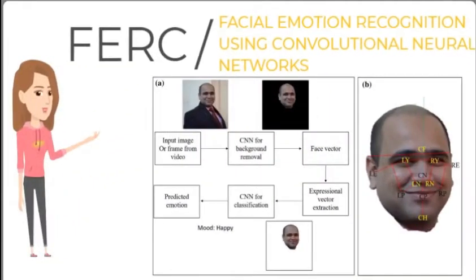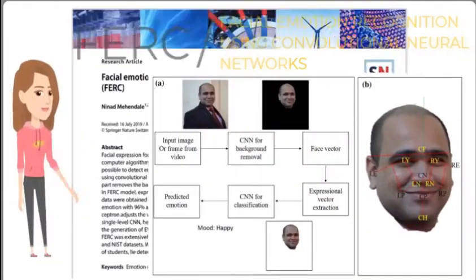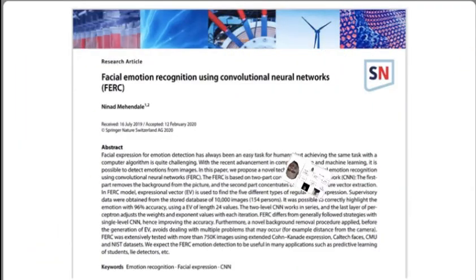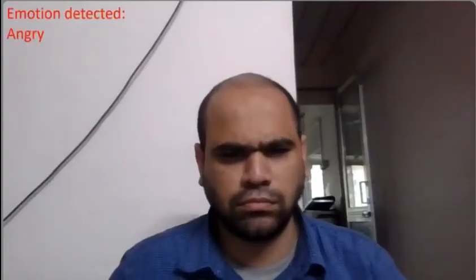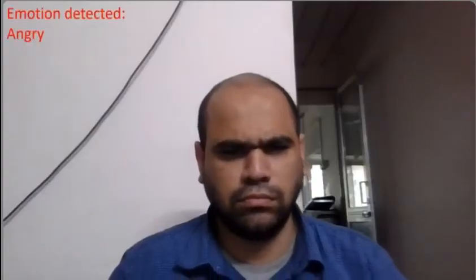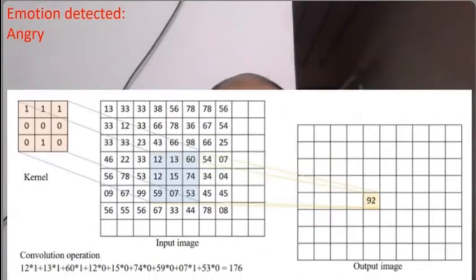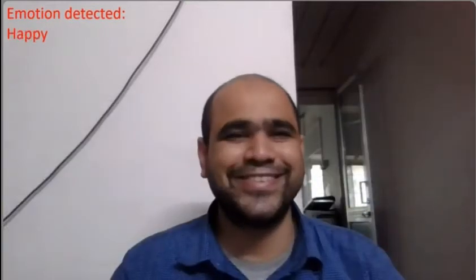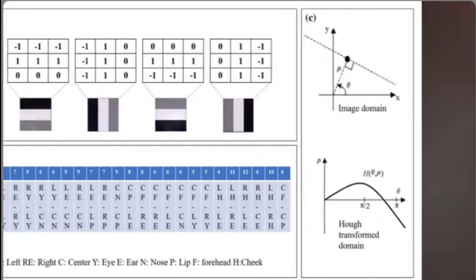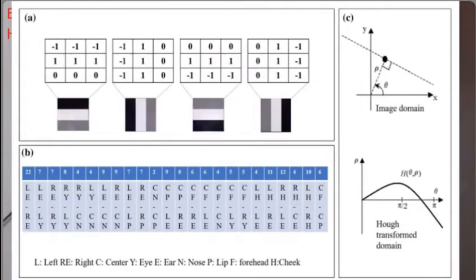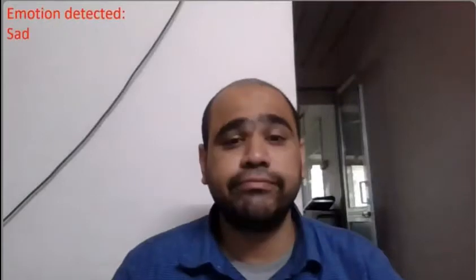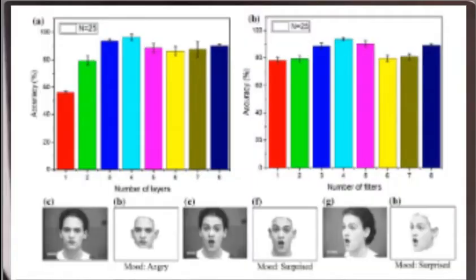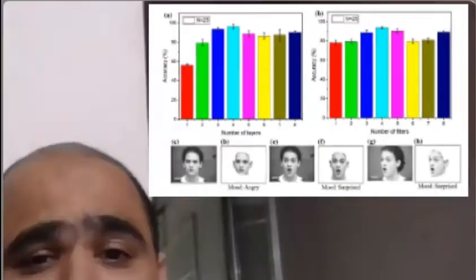FVRC stands for Facial Emotion Recognition using Convolutional Neural Network. It is the process of automatically recognizing emotions based on the facial expression of a person. FVRC can recognize five types of emotions: happy, sad, angry, surprised, and feared.